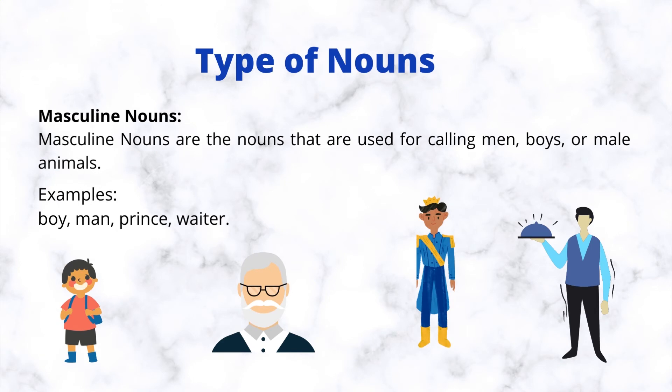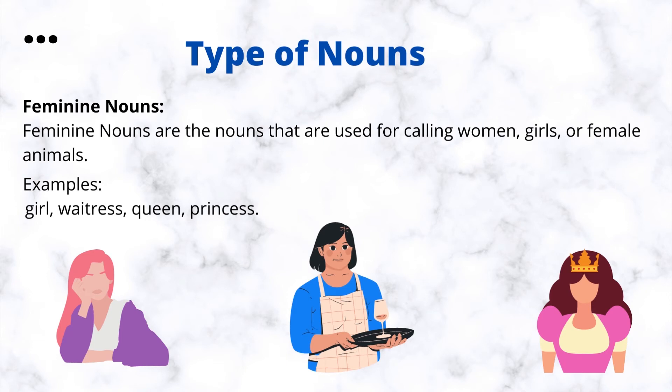Masculine nouns are the nouns that are used for calling men, boys, or male animals. Examples: boy, man, prince, waiter. Feminine nouns are the nouns that are used for calling women, girls, or female animals. Examples: girl, waitress, queen, princess.